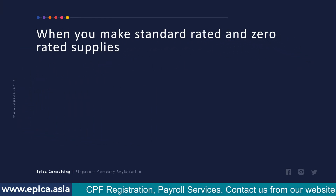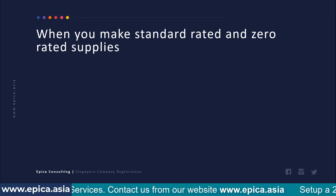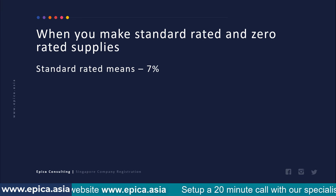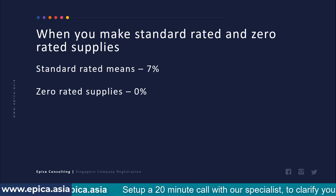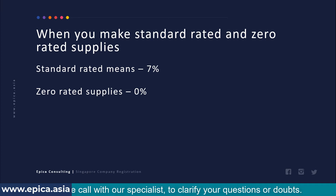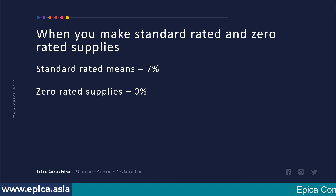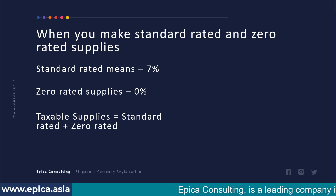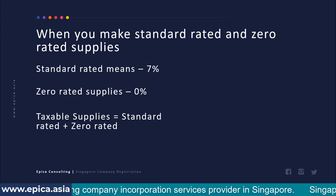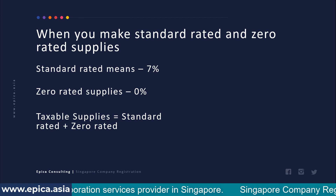The next point is when you make standard rated and zero rated supplies both together. Standard rated supplies are those which attract seven percent GST, and zero rated means those supplies which attract zero percent GST. Two examples of zero rated supplies are export of goods and export of services. The definition of taxable supplies includes both standard rated and zero rated, so even zero rated supplies are counted towards taxable supplies.